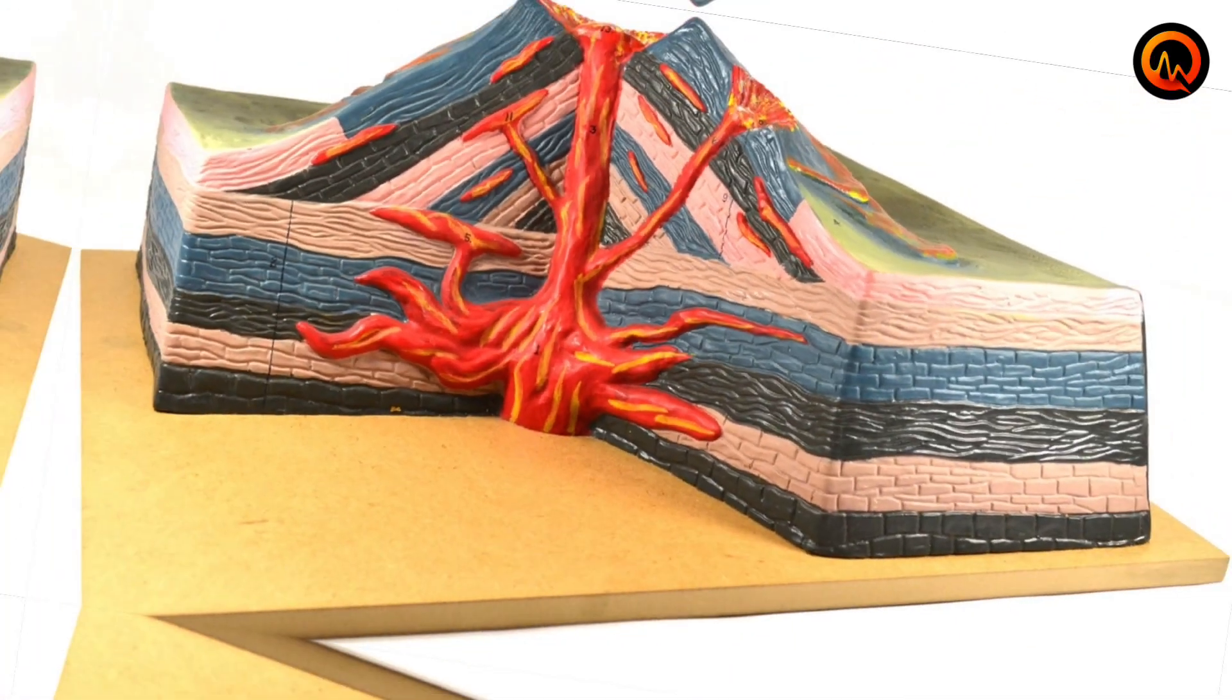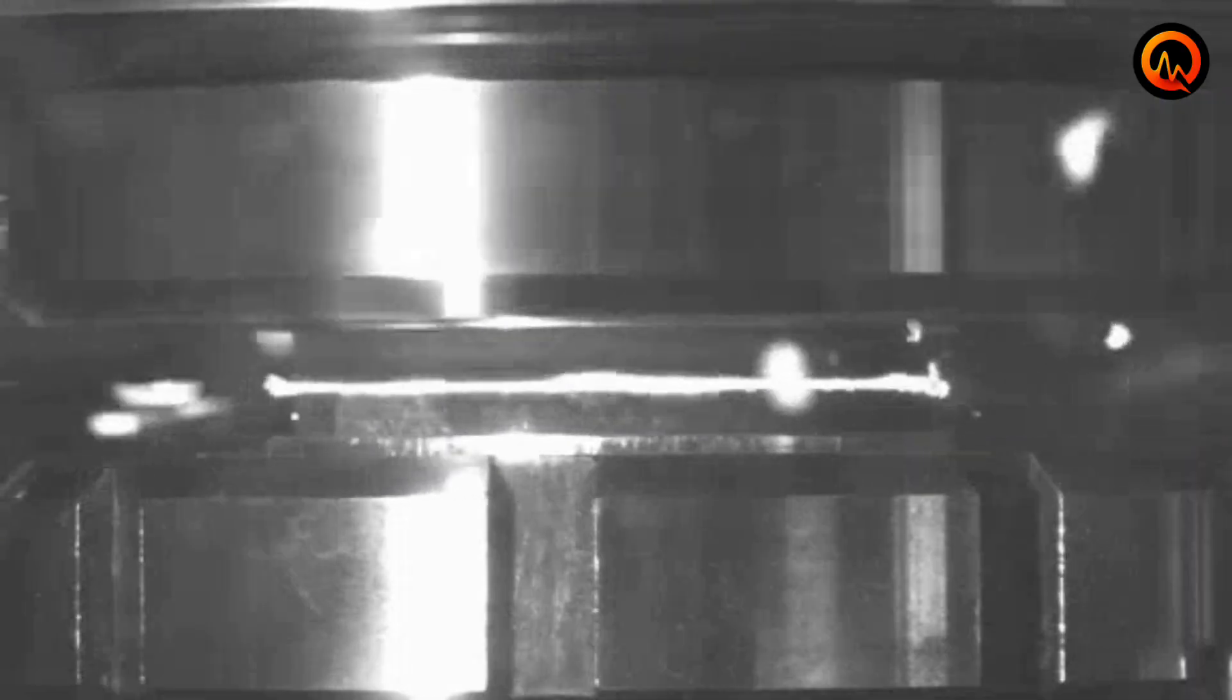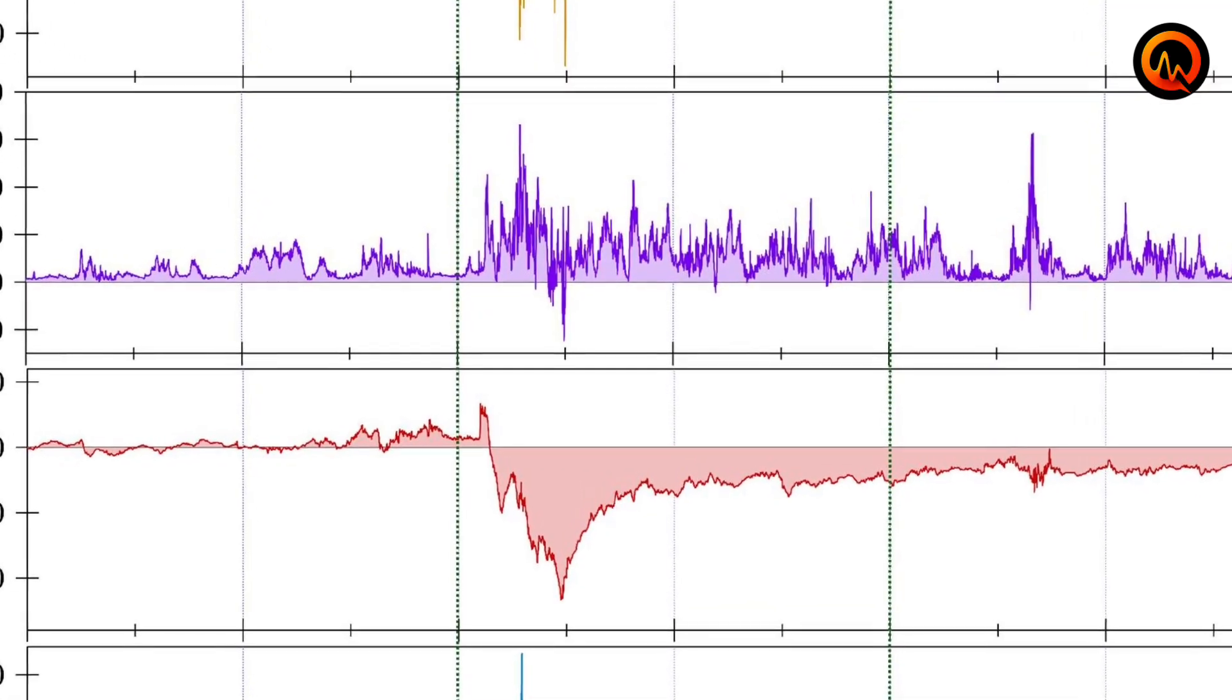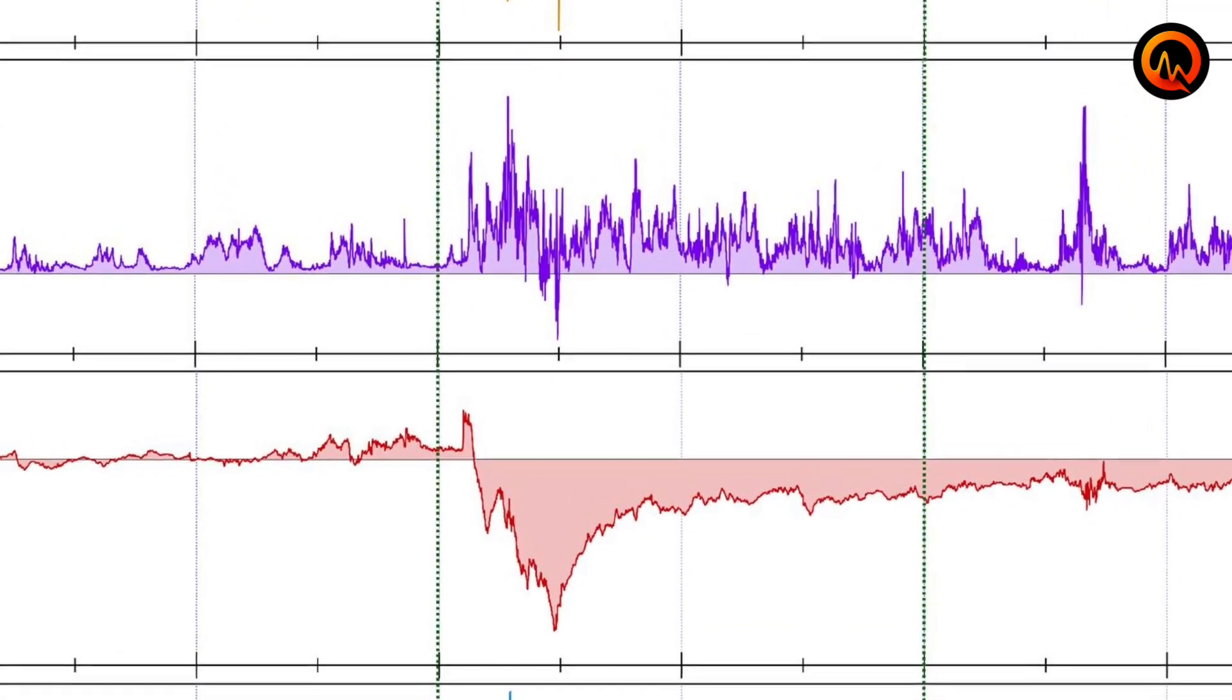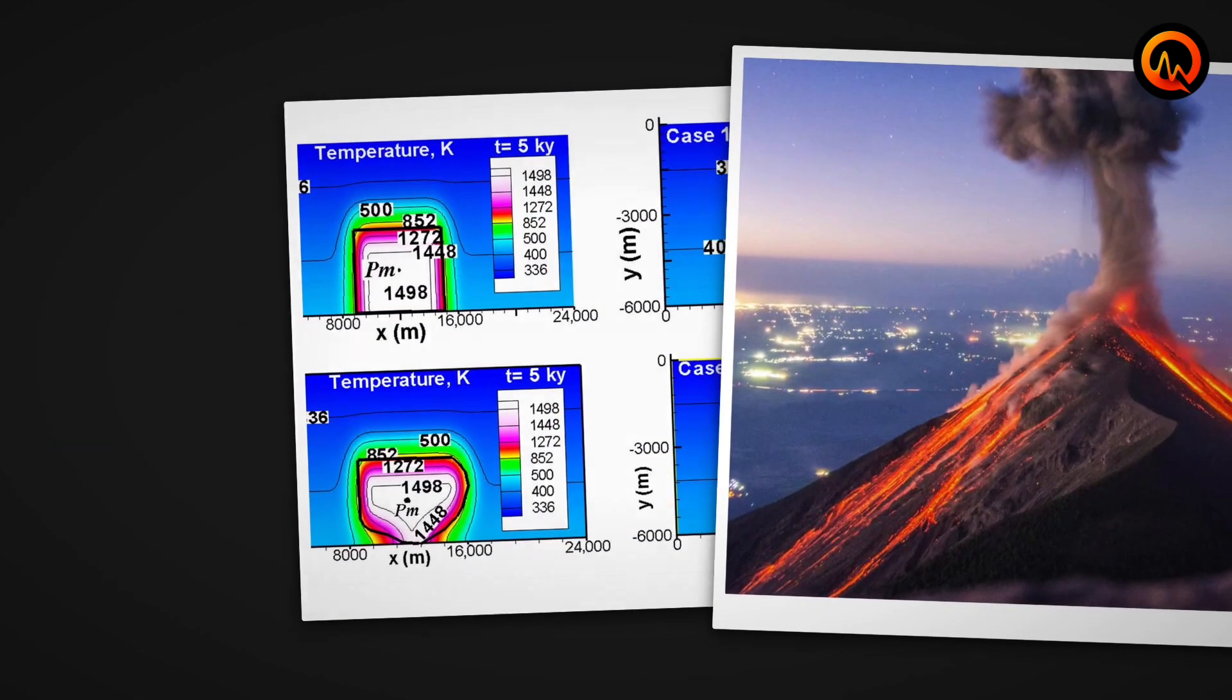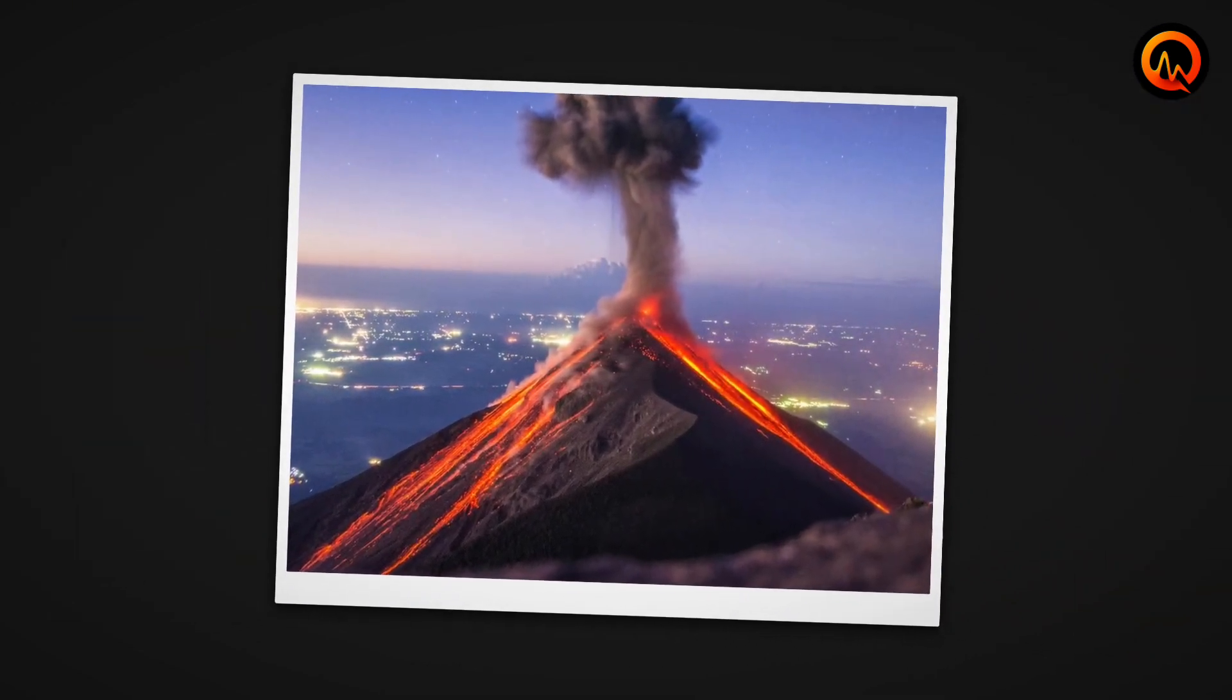Magma chambers exist in delicate equilibrium. The molten rock inside maintains specific pressure and temperature conditions that keep it stable beneath the surface. When electromagnetic currents alter the electrical conductivity of surrounding rock, they can destabilize this equilibrium by changing how heat and pressure distribute within the chamber.